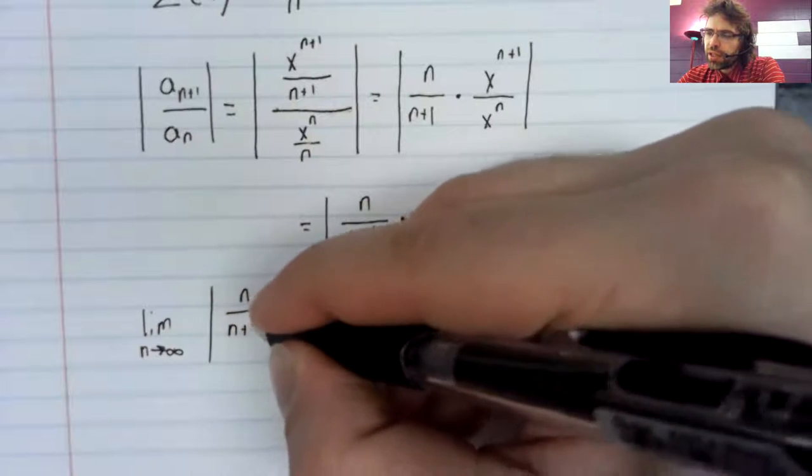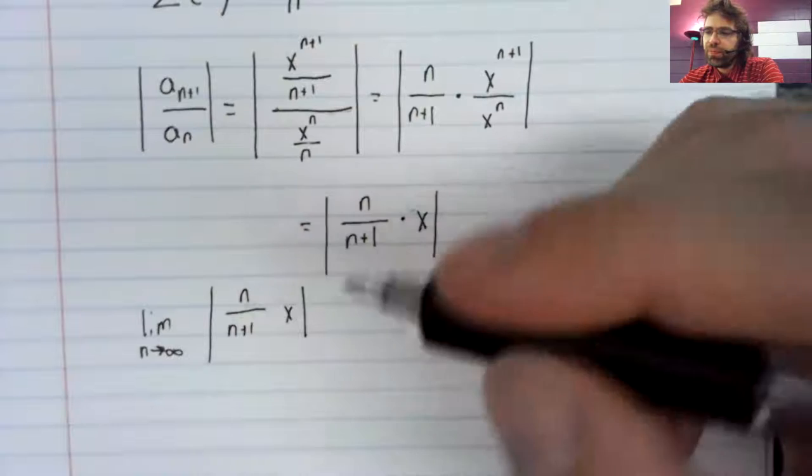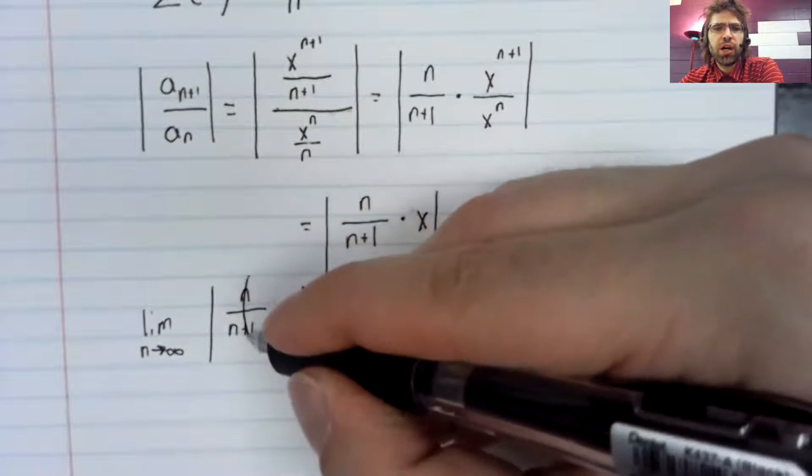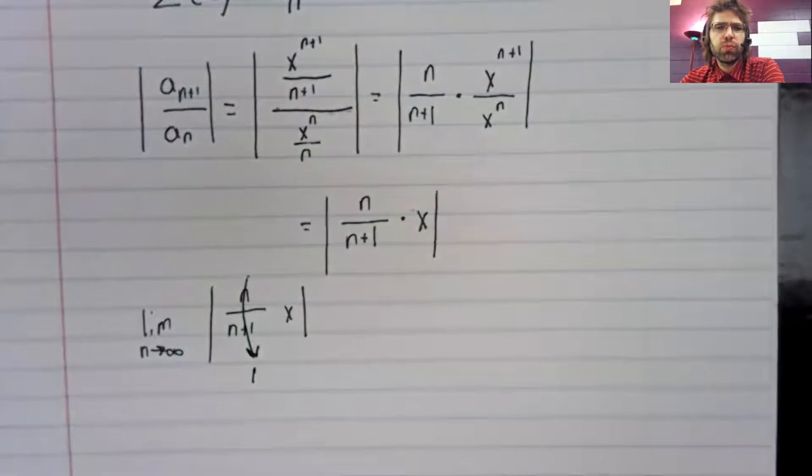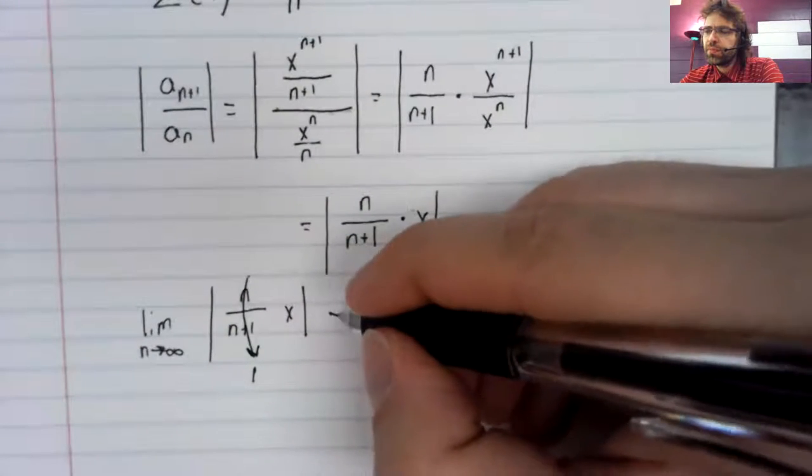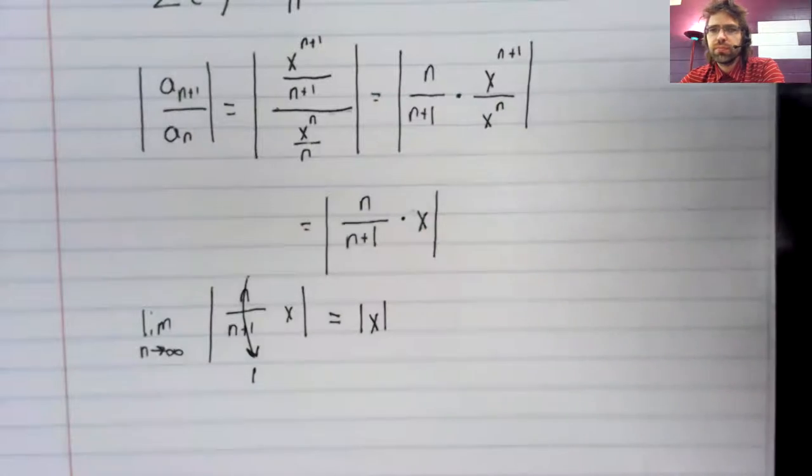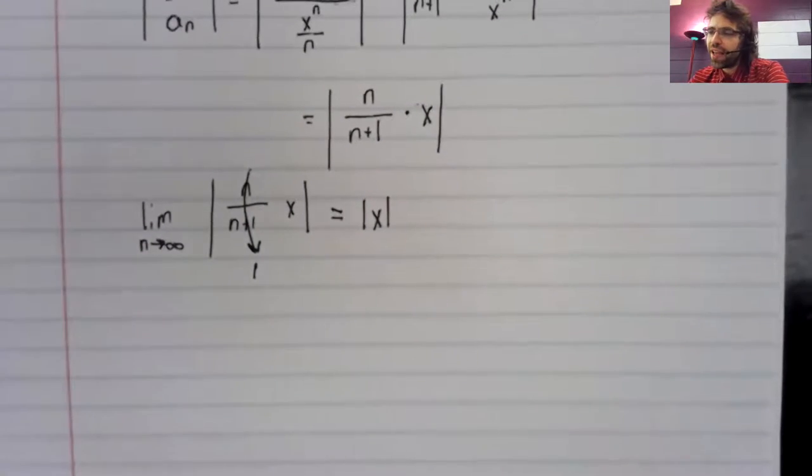And as n approaches infinity, n over n plus one approaches one. So this limit is the absolute value of x.